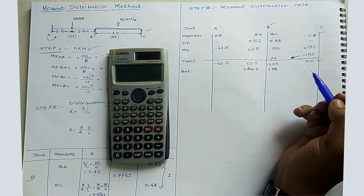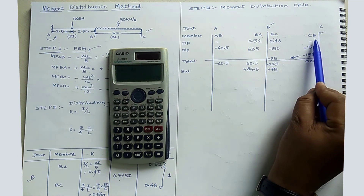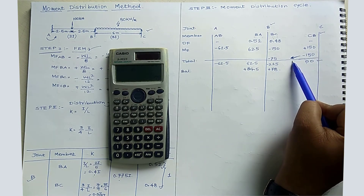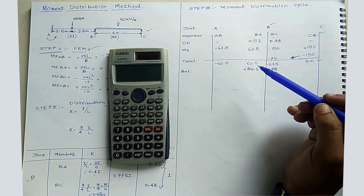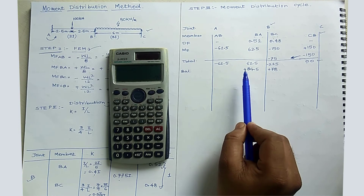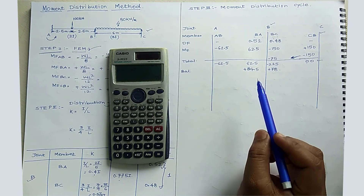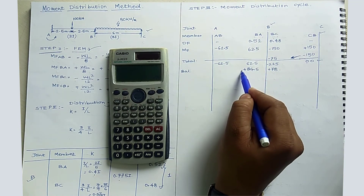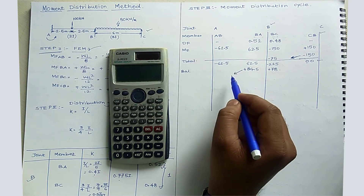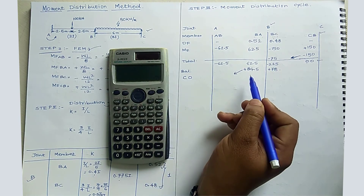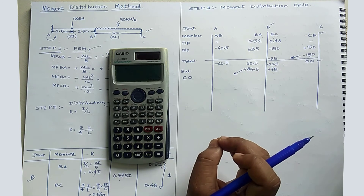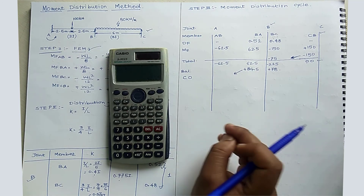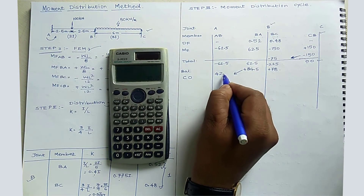Fixed supports gain 50% of the value from the near end — this is the carry-over step. The fixed support A receives carry-over from BA: 50% of 84.5 = 42.25 kNm, which is added to the AB column.